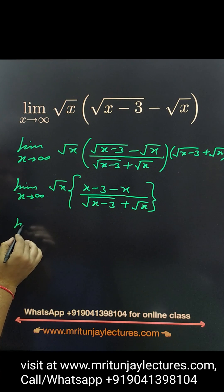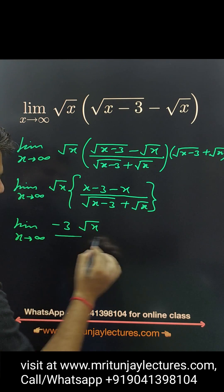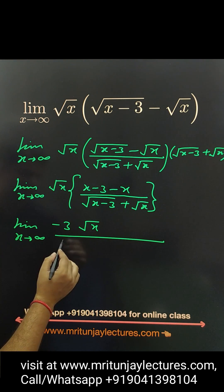x x cancel. So limit x tends to infinity. Here minus 3 common. Here root x divided by now. In denominator, if we take root x as common.